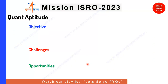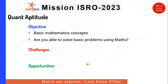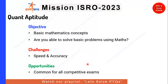Coming to the next section — Quantitative Aptitude. The basic objective of this section is understanding of mathematical concepts and whether you are able to solve basic problems using mathematics. The only challenge for this section is speed and accuracy, as quantitative aptitude questions take a lot of time and accuracy is another aspect. Again, it is common for all competitive examinations, so preparation for any other competitive exam will be beneficial for ISRO as well.